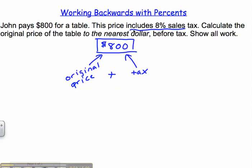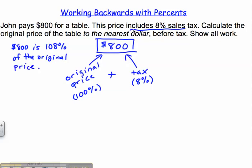Now, we know the original price is always 100% of itself, and the tax in this case is 8%. So if we were to reword this question, we could say $800 is 108% of the original price. And I got 108% from adding together the percent of the original and the tax.